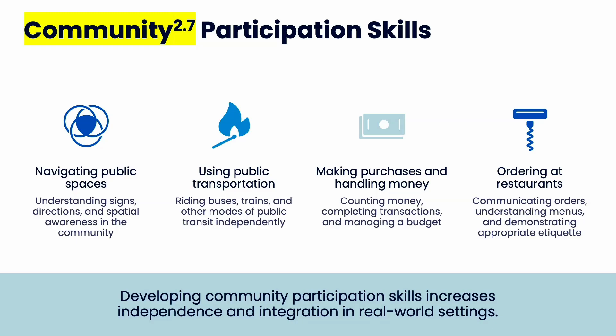Making purchases and handling money is a huge skill — knowing you have ten dollars, being in a store, and navigating that whole process. Ordering at restaurants can also be huge, especially if someone has communication difficulties — communicating orders, understanding menus, demonstrating appropriate etiquette. Street safety is one of the most important and realistic safety concerns: knowing where and when to cross the street, how to look both ways, not crossing without a crosswalk, and where to walk if there is no sidewalk.